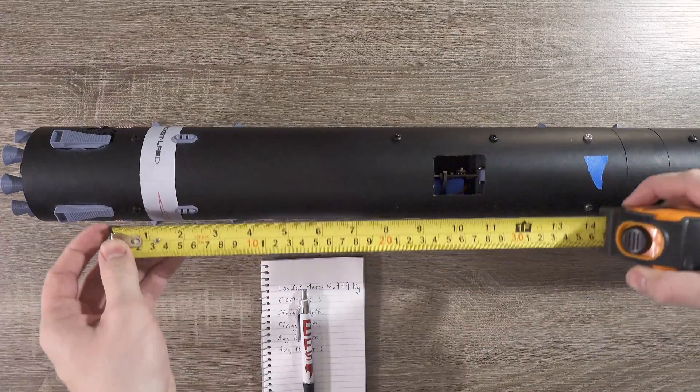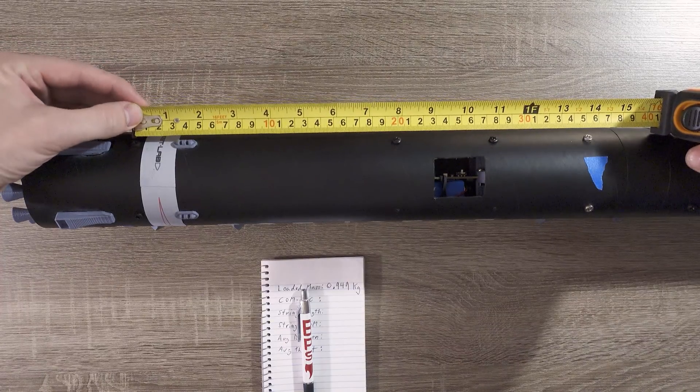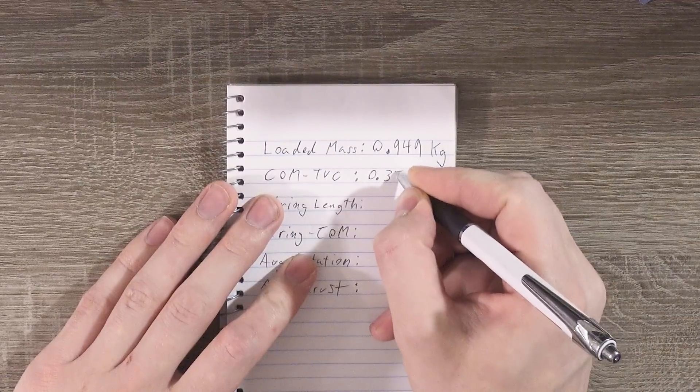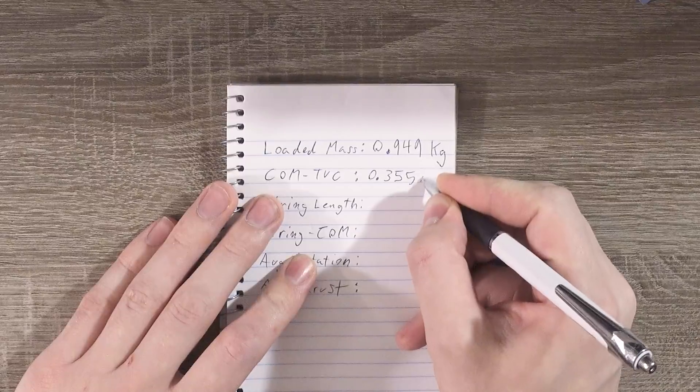Then we'll measure the distance between the center of mass and the screws of the thrust vectoring mount. In this case, it looks like it's about 35 and a half centimeters. The signal app expects this measurement in meters, so we'll put 0.355 meters.